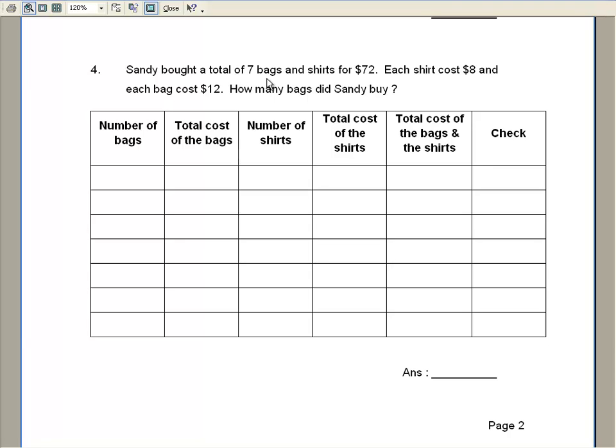Sandy bought a total of 7 bags and shirts for $72. Each shirt cost $8 and each bag cost $12. How many bags did Sandy buy?